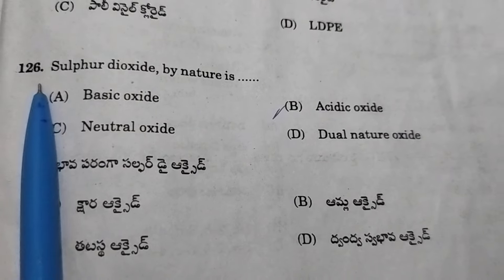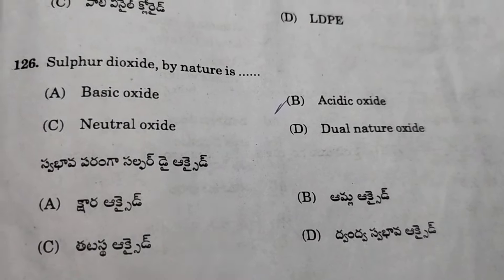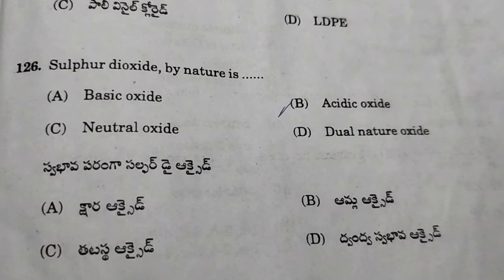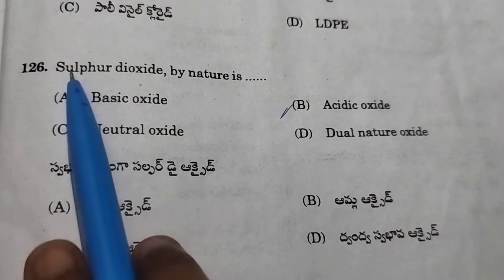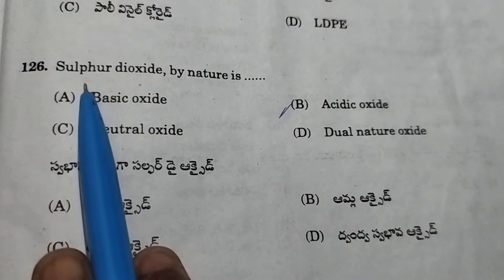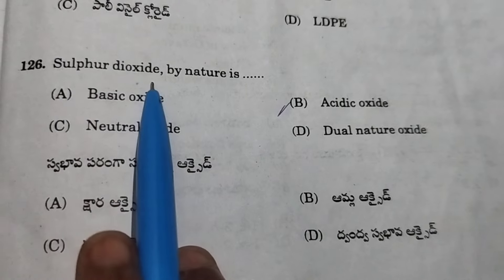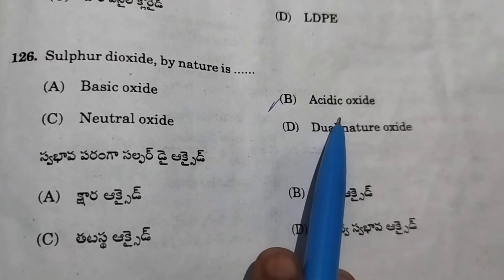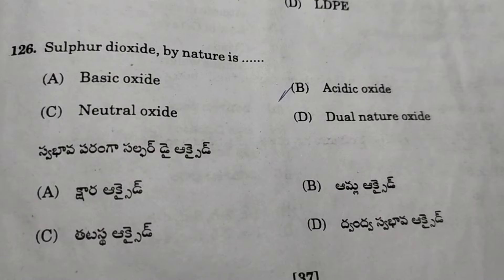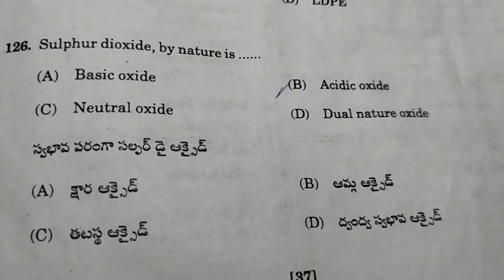Next: sulfur dioxide by nature — sulfur dioxide is a non-metal. Non-metal oxides are acidic in nature, so sulfur dioxide is an acidic oxide.